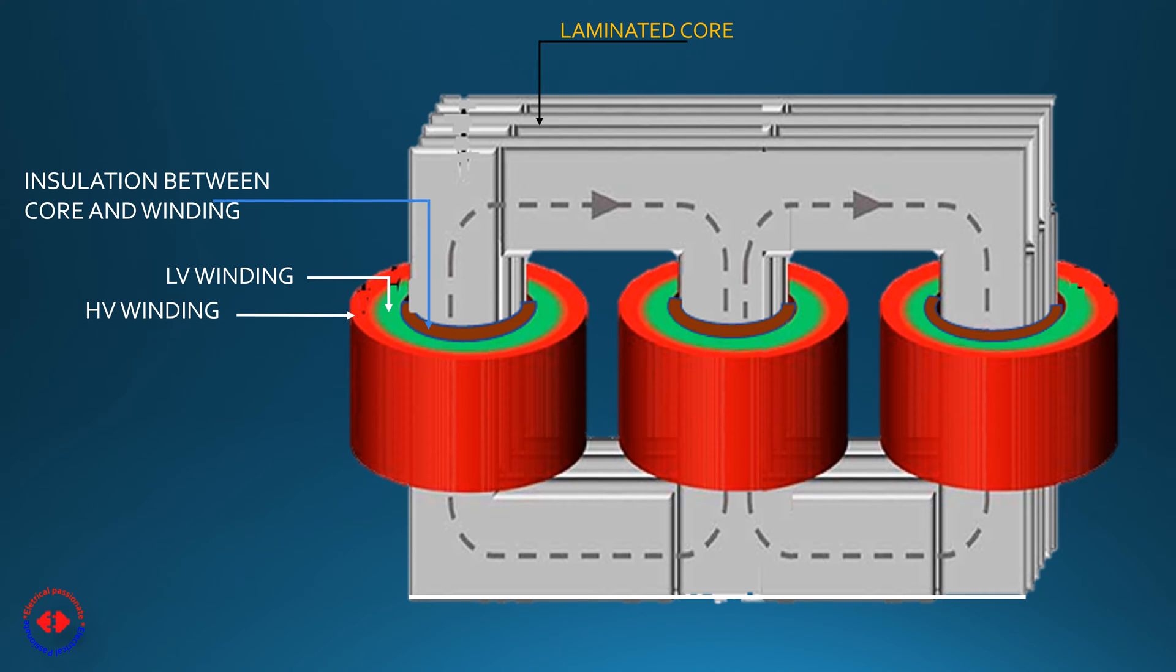LV winding is placed near the core due to its low voltage and thus less requirement of insulation between them. Both HV and LV windings are insulated with each other and with the core.